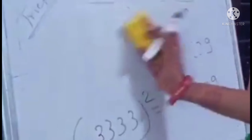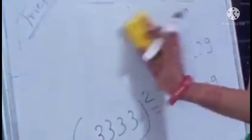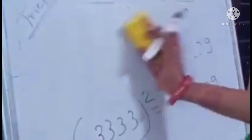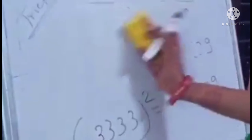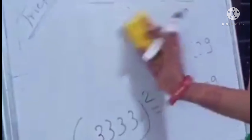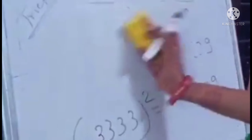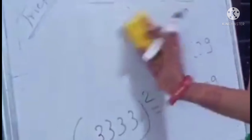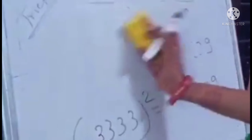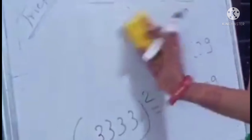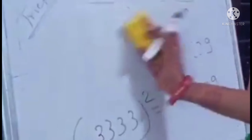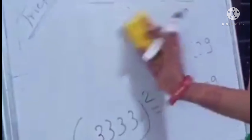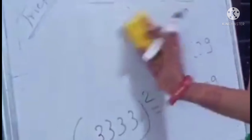Now, 85 squared — how can we do it? And 95 squared. So guys, you can see here: 5 squared is easy, 15 squared you can write the answer, but for any number ending in 5 — 85, 95, 75, 65 — any number squared, you can easily give the answer. Let me explain here how we do it.